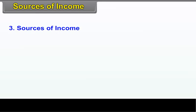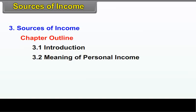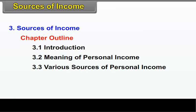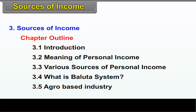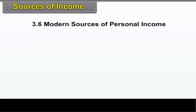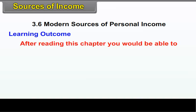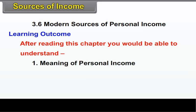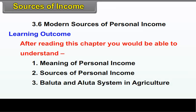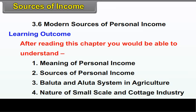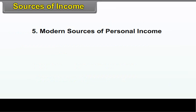Chapter 3: Sources of Income. Chapter Outline: 3.1 Introduction, 3.2 Meaning of Personal Income, 3.3 Various Sources of Personal Income, 3.4 What is Baluta System, 3.5 Agro-Based Industry, 3.6 Modern Sources of Personal Income. After reading this chapter, you would be able to understand the meaning of personal income, sources of personal income, Baluta and Aluta system in agriculture, nature of small scale and cottage industry, and modern sources of personal income.